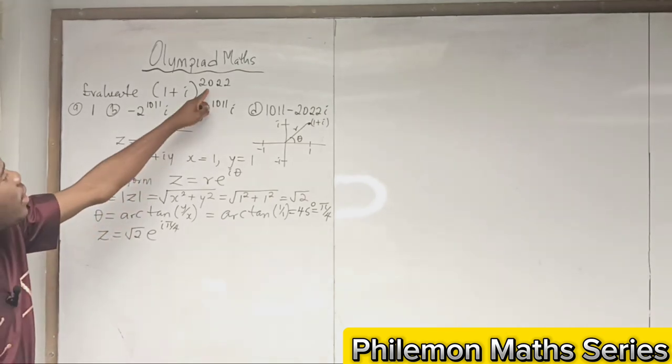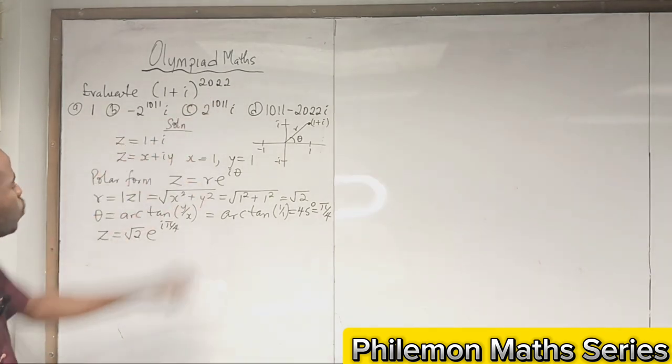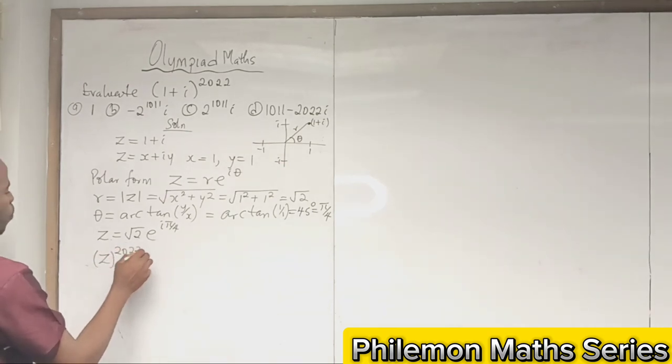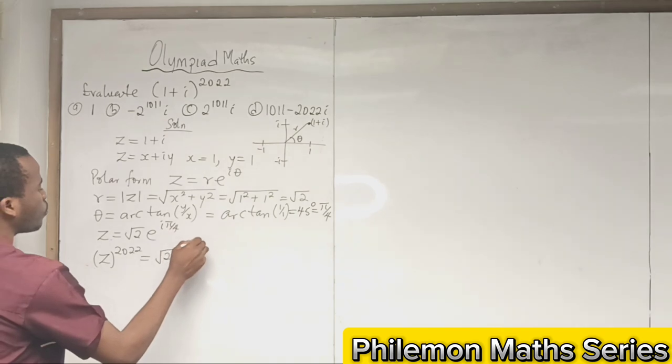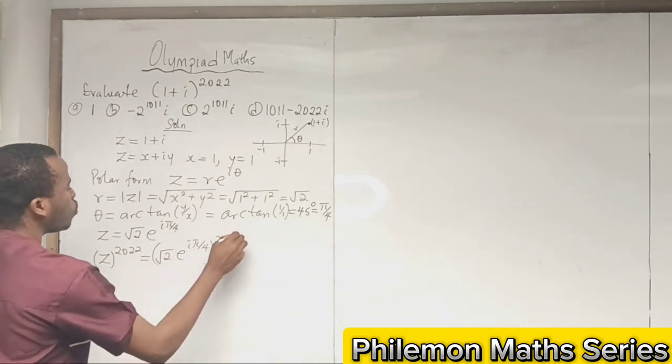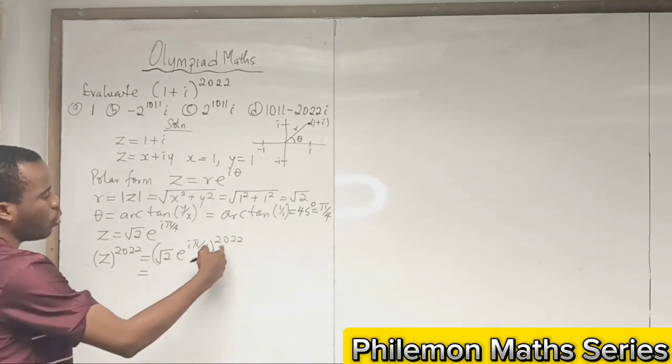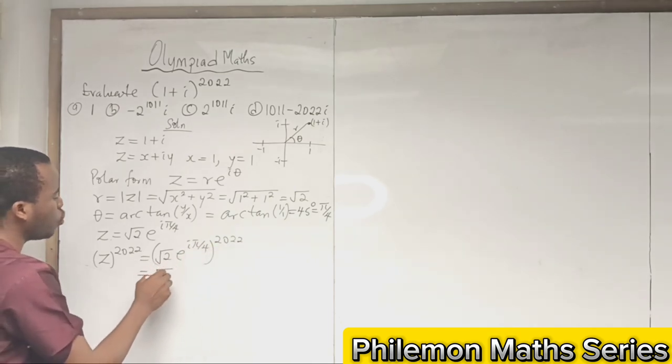Now we can take it to the power of 2022. So z^2022 = (√2 * e^(iπ/4))^2022. Since we have a product here, we can evaluate each of them individually. So this is (√2)^2022 times (e^(iπ/4))^2022.